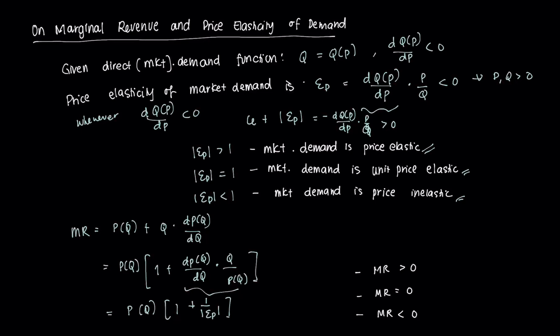We can infer something about the marginal revenue function's value. When price elasticity is greater than 1, i.e. when demand is price elastic, marginal revenue is greater than 0. If it's unit elastic, marginal revenue is equal to 0. And if the market demand is price inelastic, it suggests that the marginal revenue is less than 0. So those are a few introductory concepts to a monopolist. In the next video, we'll discuss how a monopolist maximizes its profit and minimizes cost. Thank you very much for watching.